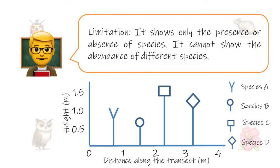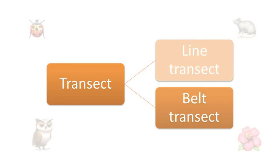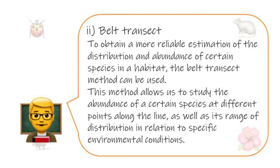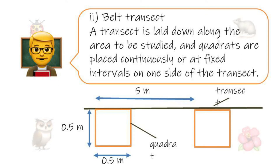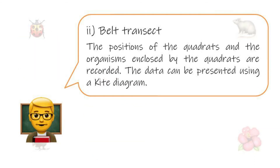The line transect cannot show the abundance of different species. Therefore, we can use the second method: the belt transect. To obtain a more reliable estimation of the distribution and abundance of certain species, the belt transect method can be used. This method allows us to study the abundance of a species at different points along the line, as well as its range of distribution in relation to specific environmental conditions. A transect is laid along the area to be studied, and quadrats are placed continuously or at fixed intervals on one side of the transect. The positions of the quadrats and the organisms enclosed are recorded. The data can be presented using a kite diagram.